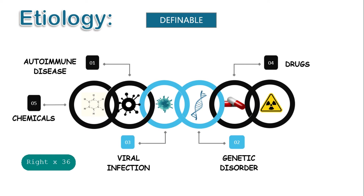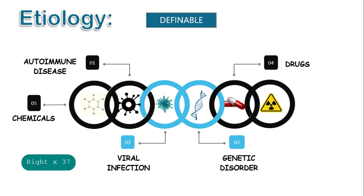Another cause is chemicals that may produce marrow aplasia, such as benzene and benzene derivatives that may be found in airplane glue, paint remover, and dry cleaning solution. Certain toxic materials, such as inorganic arsenic, glycol ethers, plutonium, and radon have also been implicated as potential causes. Lastly, is exposure to radiation.